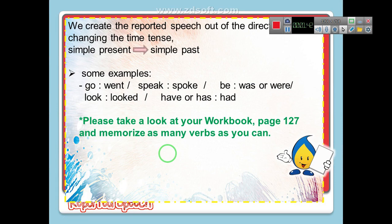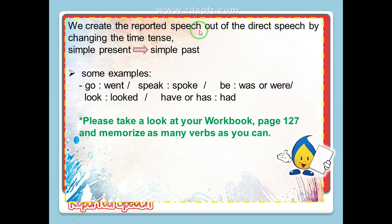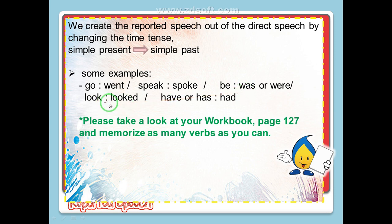Because I'm reporting a sentence, we create the reported speech out of the direct speech by changing the tense. We change the verb or the tense from simple present into simple past. Examples: 'go' becomes 'went', 'speak' becomes 'spoke', 'be' becomes 'was', 'look' becomes 'looked', 'have' or 'has' changes to 'had'. Please take a look at your workbook page 127 and memorize as many verbs as you can to use the reported speech correctly.